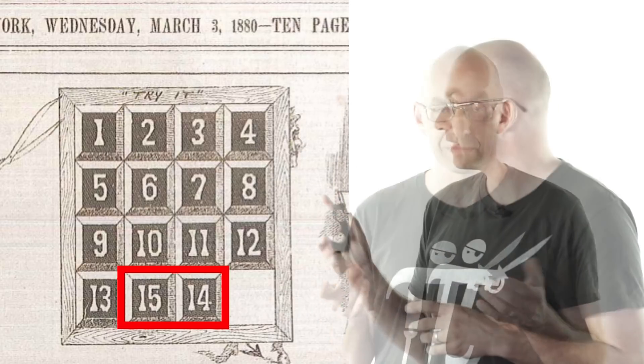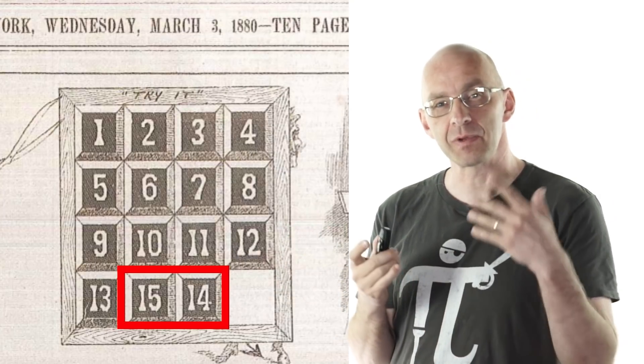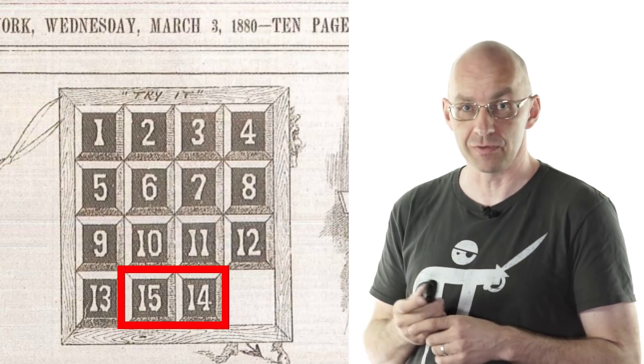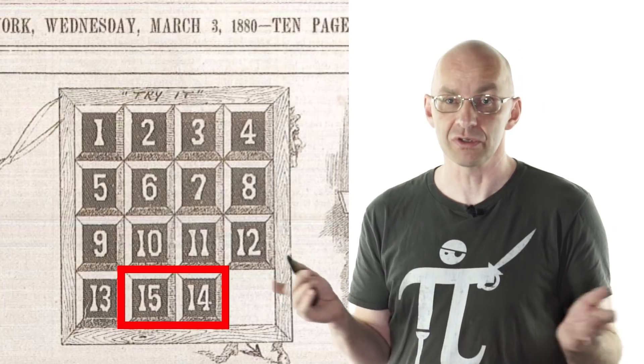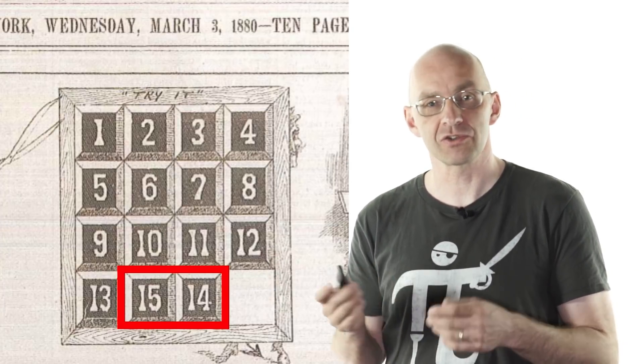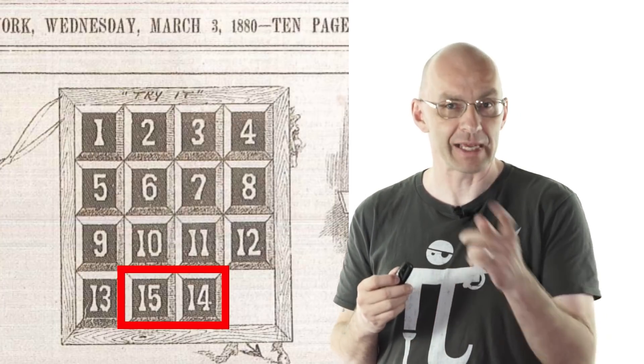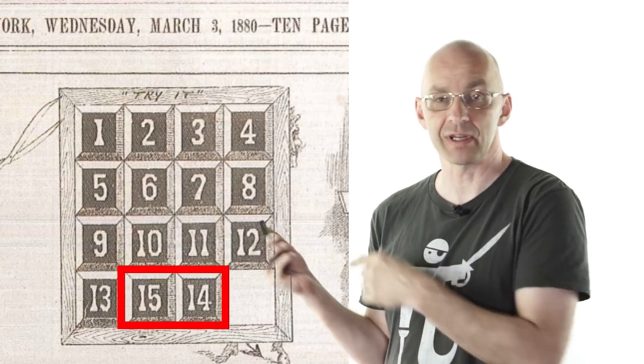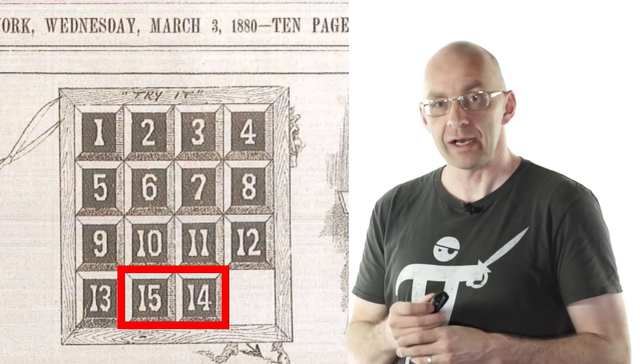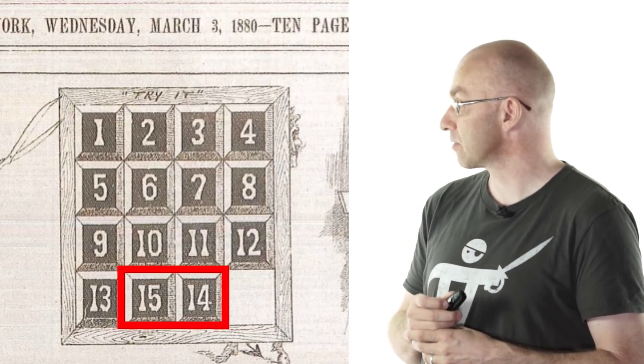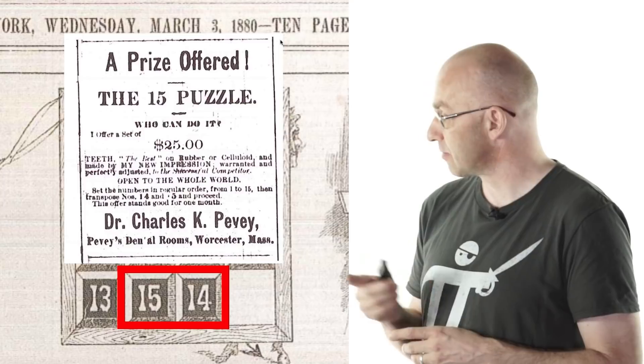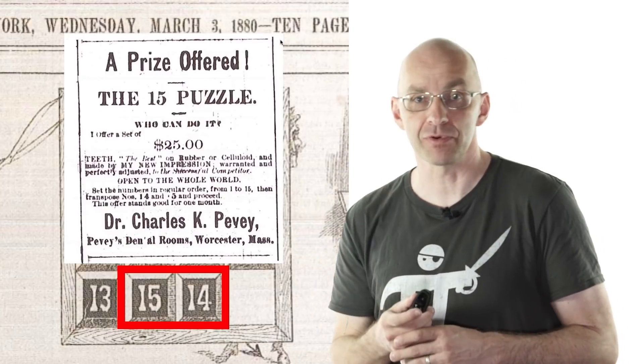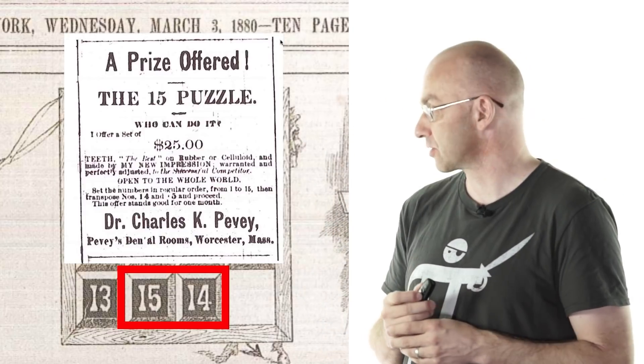What you were given is a box with the tiles like this and people asked you to solve it with legal moves. People just couldn't do it, as hard as they tried. Some people claimed they had done it but could never produce any written solutions that other people could follow and verify. People started offering prizes. The first was a set of false teeth worth $25 from a dentist, Dr. Charles Pivet from Worcester, Massachusetts. He even upped the prize adding another hundred dollars.